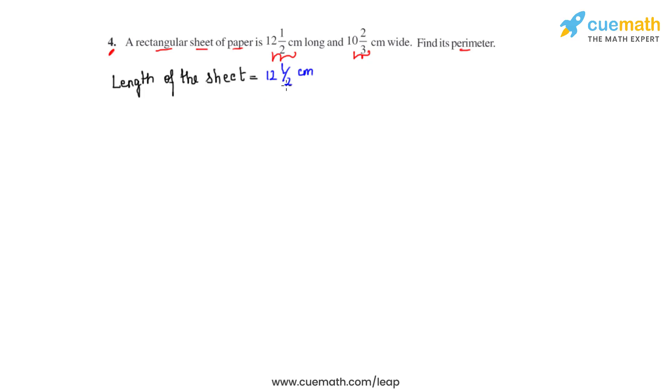That is by multiplying 2 with 12 and adding it to 1. So 2 times 12 is 24 and 24 plus 1 gives us 25 over 2 cm as the improper fraction for the length of the sheet.